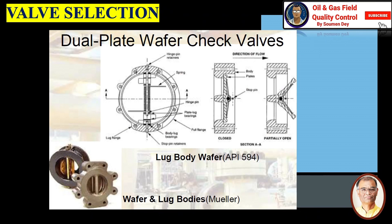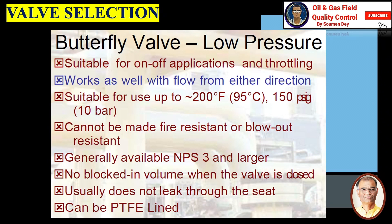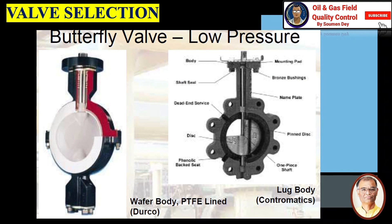Dual plate wafer check valves have excellent slam properties. Butterfly valve (low pressure): suitable for on and off application and throttling, works with flow from each direction, suitable for use up to 200°F (95°C) and 150 psig pressure. Cannot be made fire resistant or blowout resistant. Generally available NPS 3 and larger. No blocked-in volume when valve is closed, usually does not leak through the seat. Can be PTFE-lined.